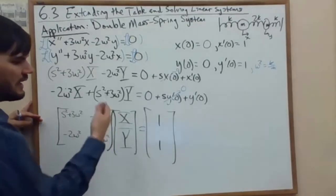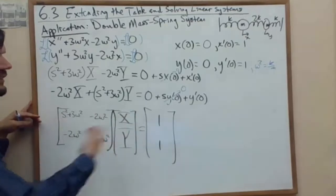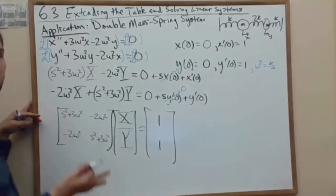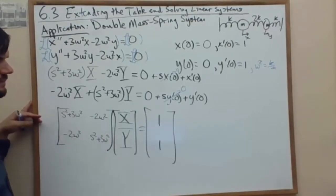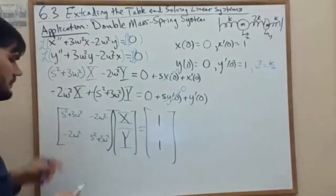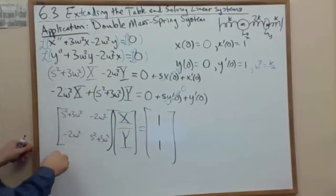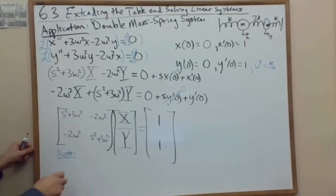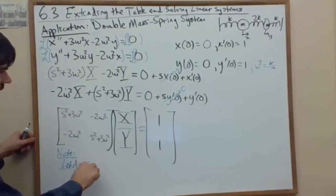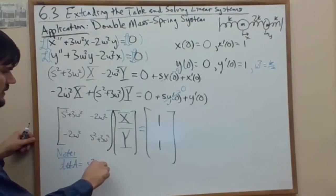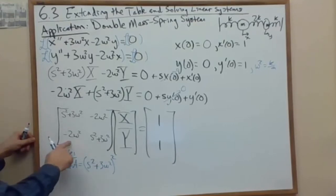So to solve for x and y, we have to either solve this linear system directly or invert using the matrix inverse, which is really just Cramer's rule. So let's first take the determinant.